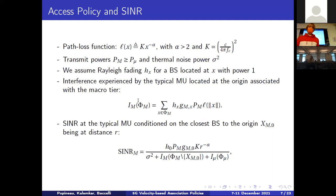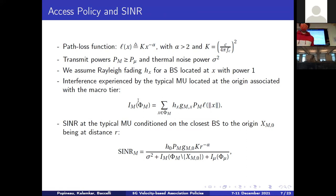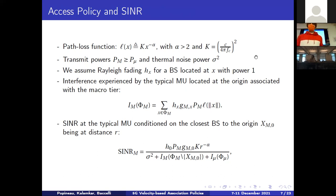Moving to the physical quantities: we use a classical power-law path loss function with exponent alpha greater than two — typically alpha equals four in simulations — and a constant K depending on the carrier frequency f_c. The transmit power of the macro tier is higher than the micro tier, and we include a thermal noise power sigma squared. We assume classical Rayleigh fading with power one, but all calculations generalize to any fading power. The interference experienced by the typical mobile user at the origin, when associated to the macro tier, is the sum over all macro base stations of path loss times antenna gain times Rayleigh fading power times transmit power.